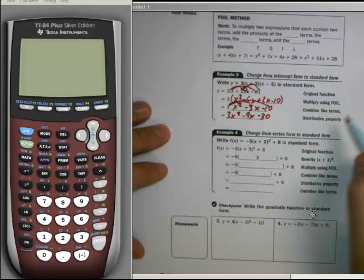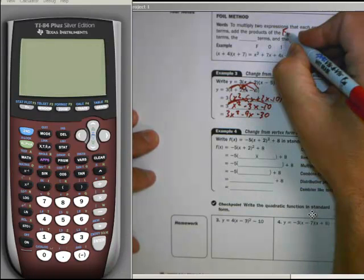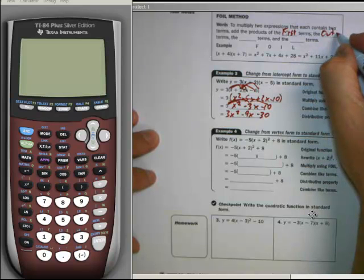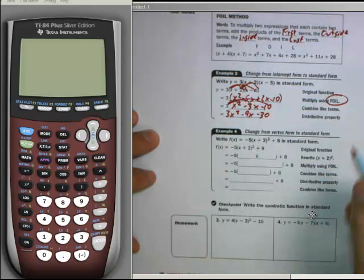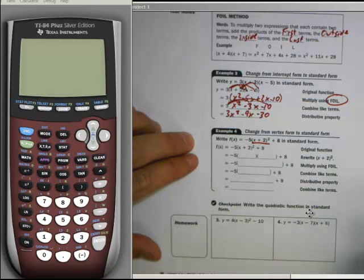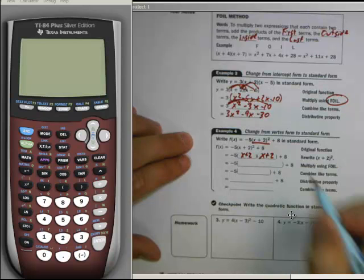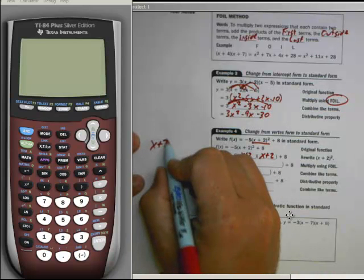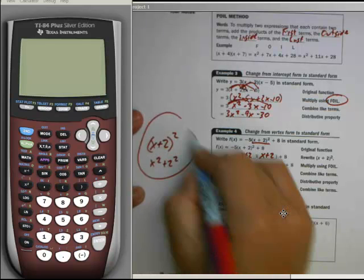I'm sure you can look up the FOIL method online if you did forget. And there will be a lot of people that are going to talk about the first terms, the outsides, the insides, and the last. But again, major review from what we've done in the past. Down here, if it says x plus 2 squared, well what does that have to do with the FOIL method? Well that's x plus 2 times x plus 2. One of the biggest mistakes I see is when you call x plus 2 squared x squared plus 2 squared. That is wrong.